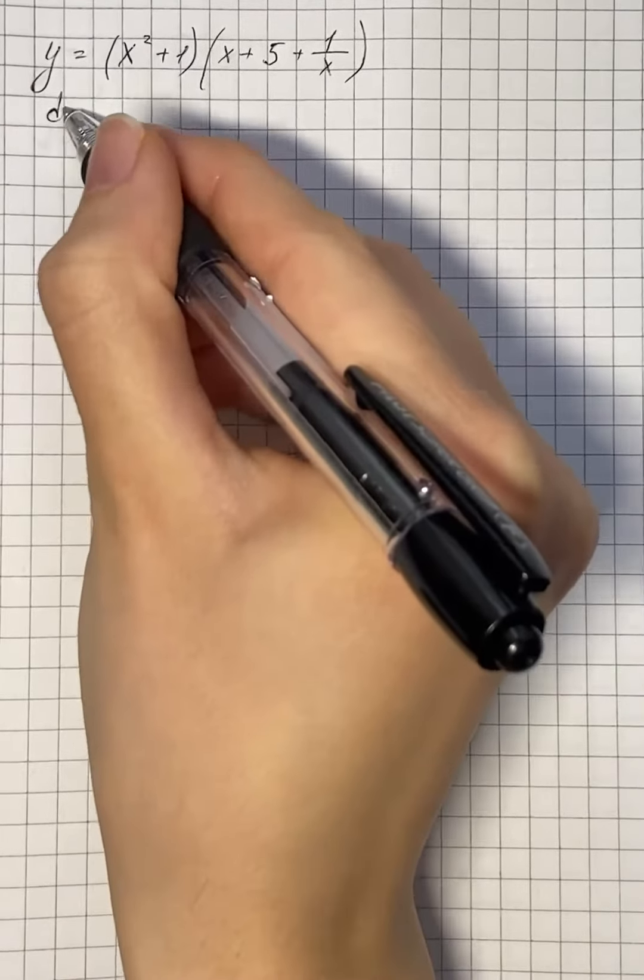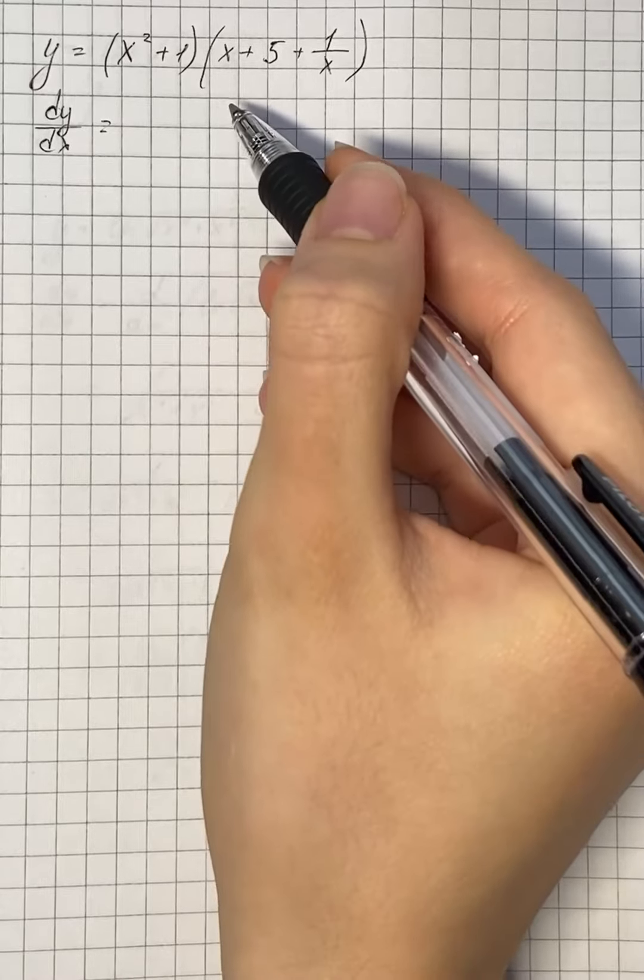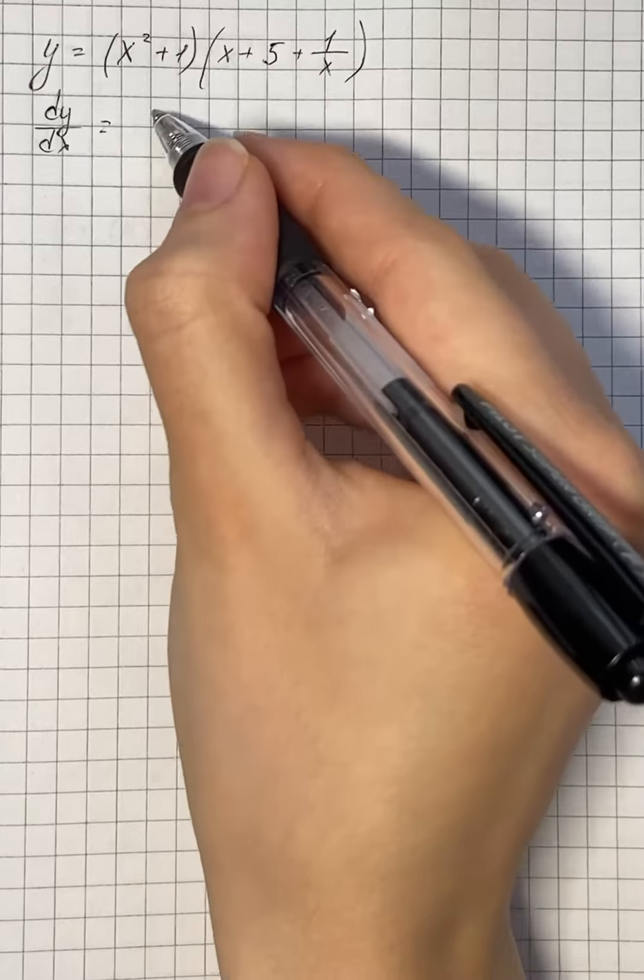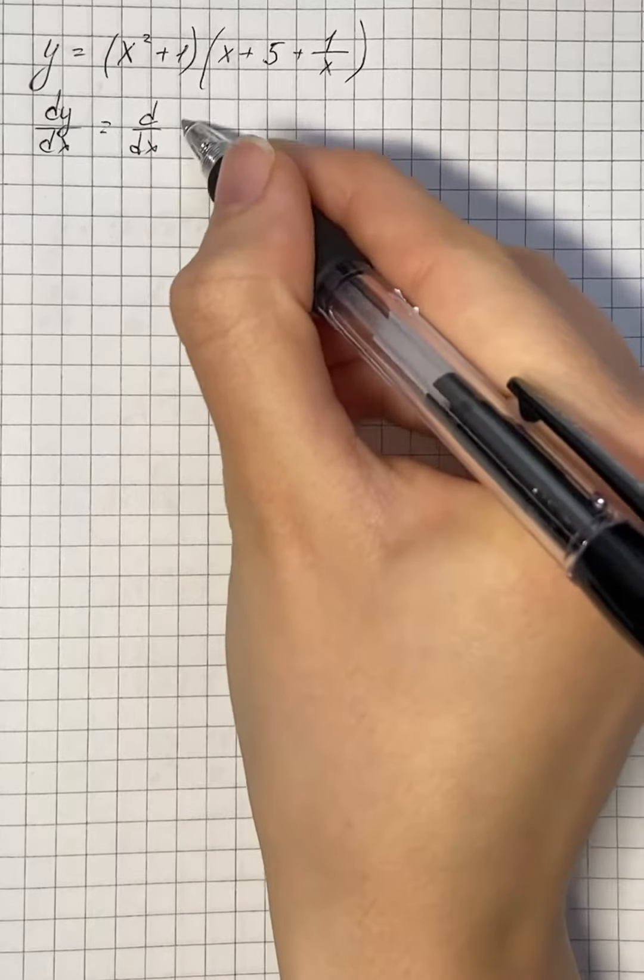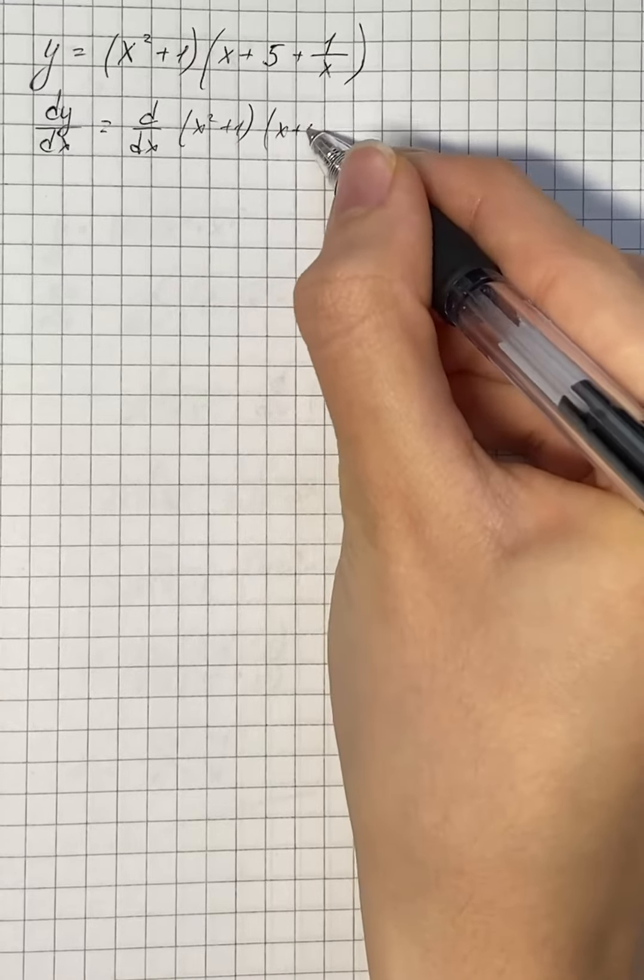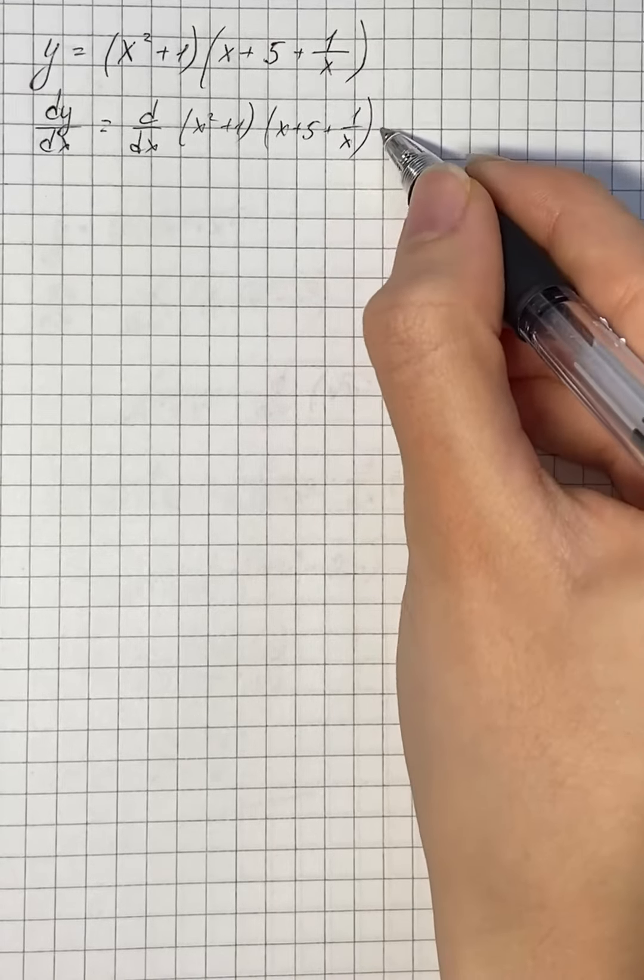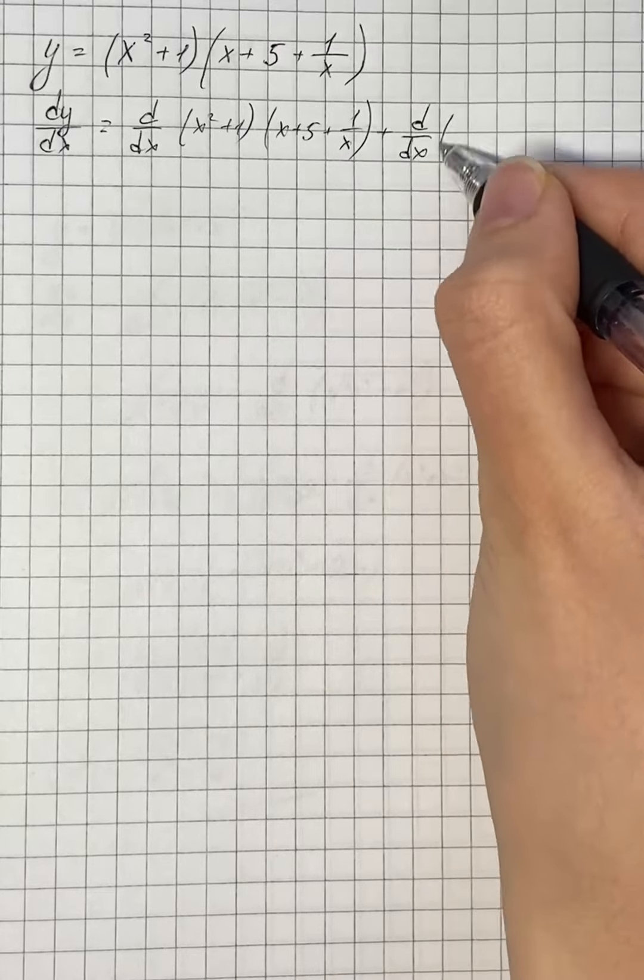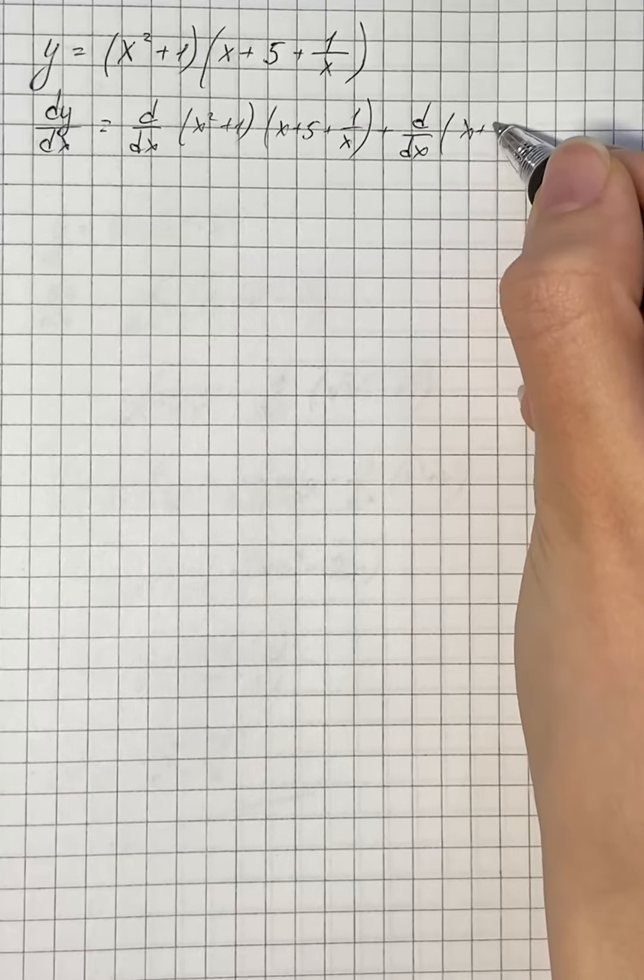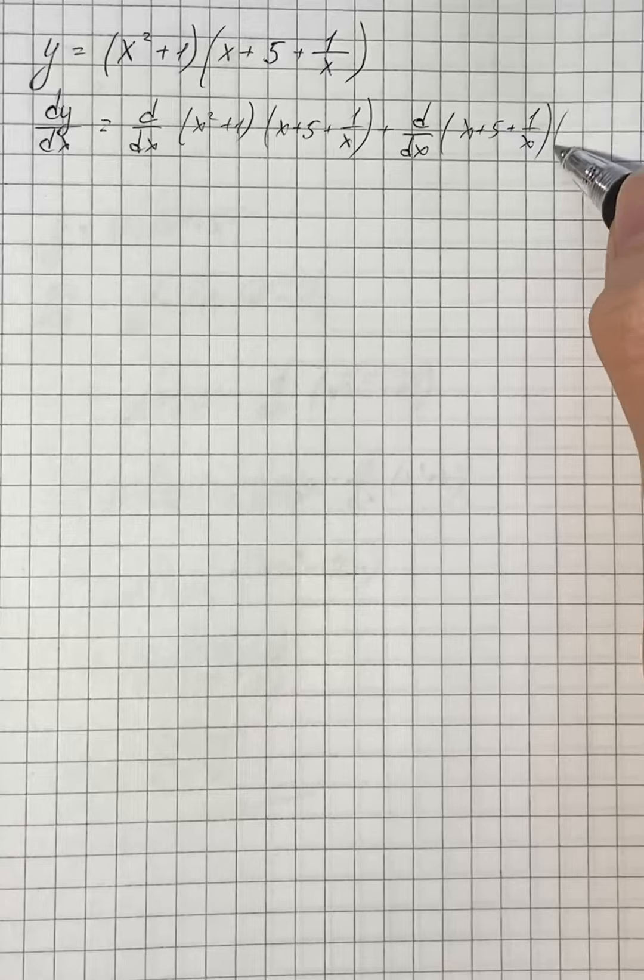We need to find derivative of the given function and here we're going to use product rule, so we need to take derivative of first term times second term plus derivative of second term times first term.